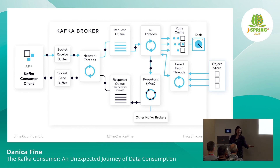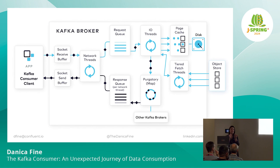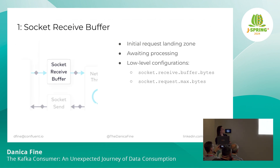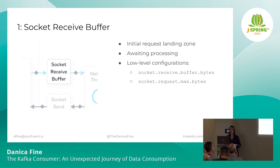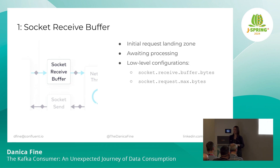At this point, we finally left the consumer. Our hero has left his cozy hobbit hole — arguably the most difficult thing to get a hobbit to do. The first stage for any incoming request — not just consumer requests but also producer requests, replication requests, and so on — is that every request is going to land on the broker in the socket receive buffer. It's sort of a landing zone for everything that comes through, and here they're going to wait to be picked up by the network threads for processing.